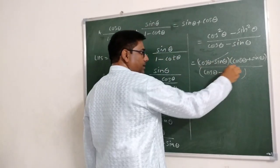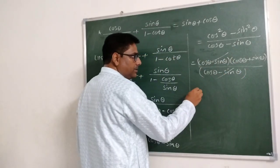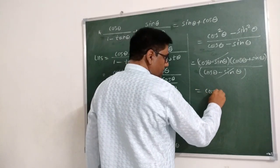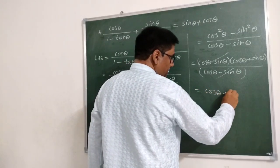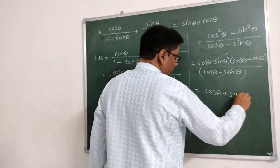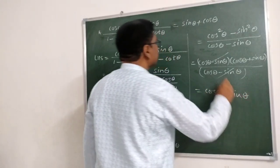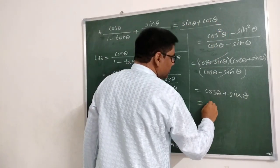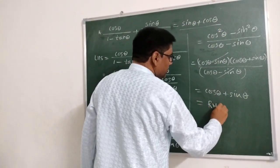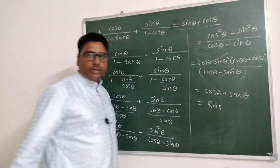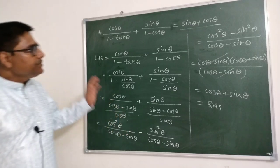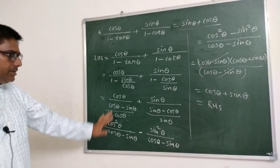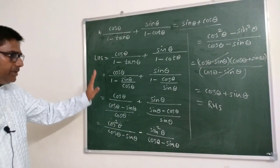See, this bracket cancels, and we get cos θ plus sin θ, which is equal to the right hand side. Therefore the given expression is true. This was a very simple problem.